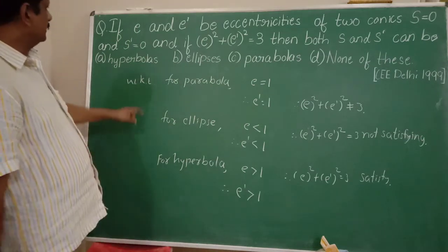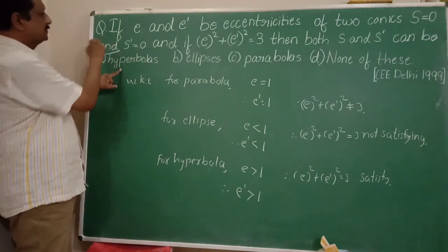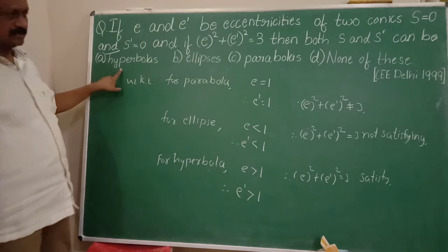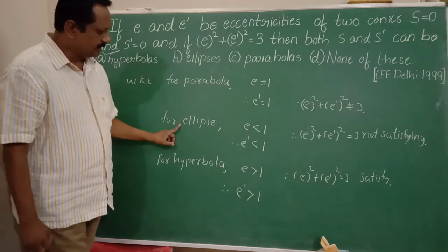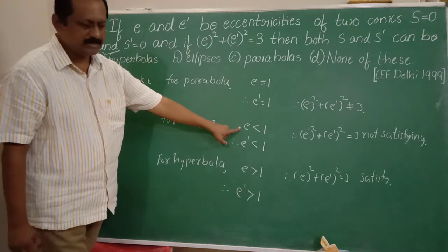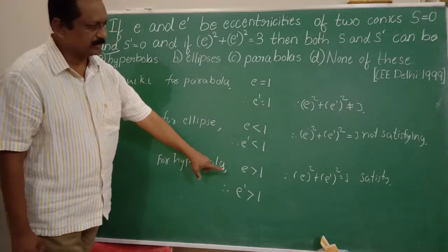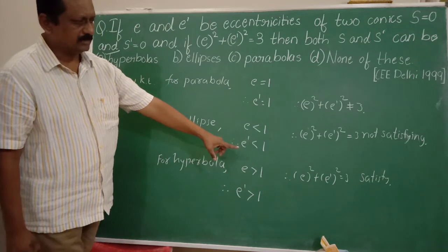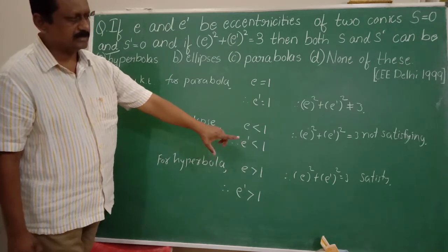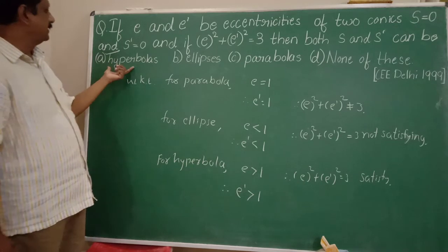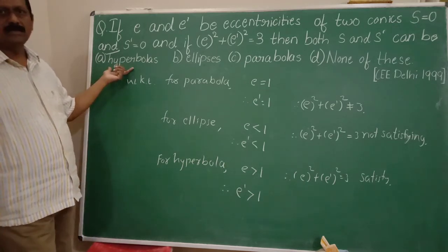Therefore, both conics must be hyperbolas. To summarize: parabola has e = 1, ellipse has e < 1, and hyperbola has e > 1. Only for hyperbolas can e² + e'² = 3 be satisfied. So the first option — both are hyperbolas — is correct.